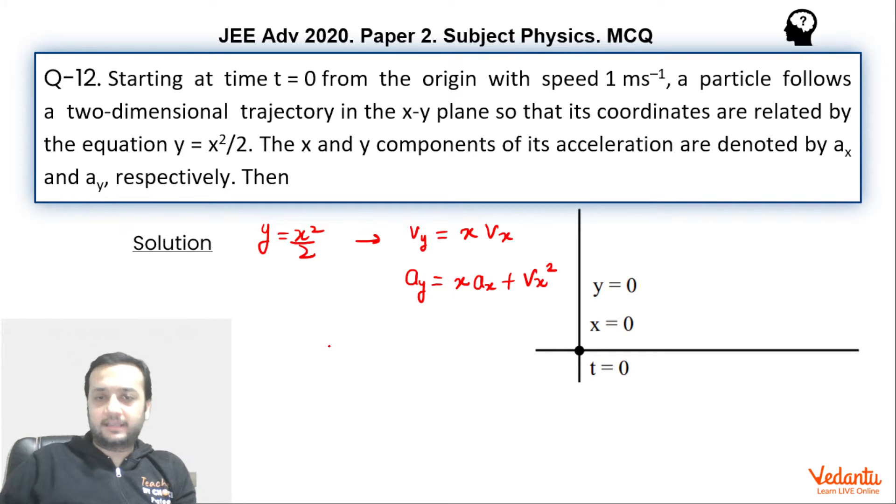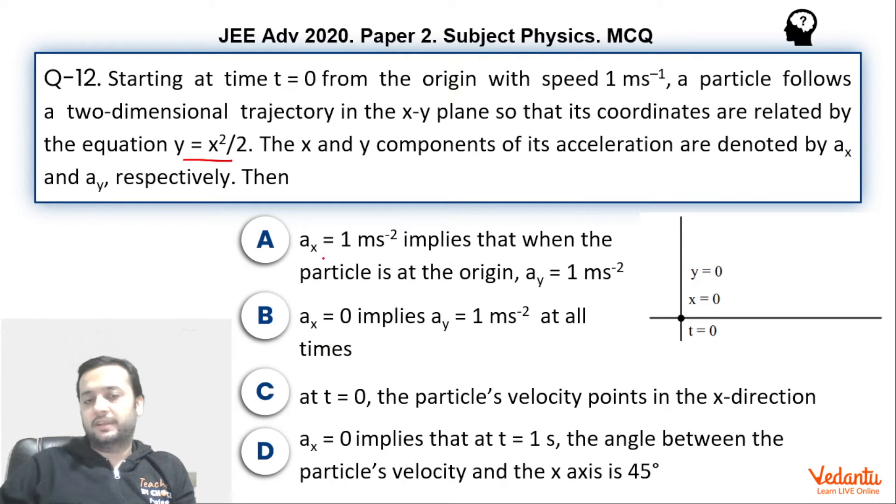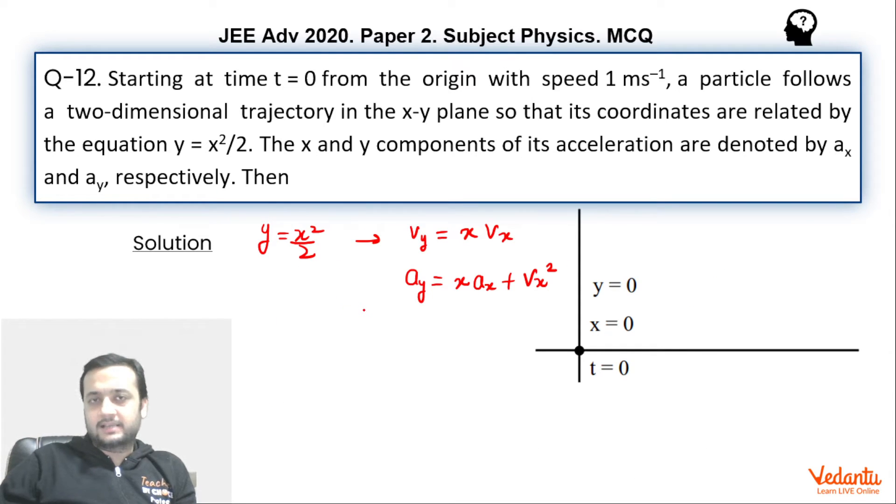Now if you go back to option 1, ax equals to 1 implies ay equals to 1. So when the particle starts when it is at origin, we can say that if you put x equals to 0 over here, so that means when the particle has started, so at x equals to 0 we can say vy was 0.